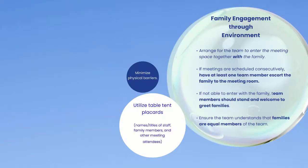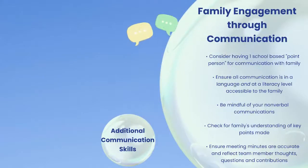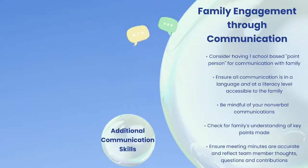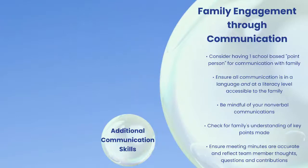Do simple things like minimize physical barriers and utilize table tent placards with names and titles of staff and the family. An example of minimizing physical barriers would be to sit beside family members rather than across from them. For communication, consider having one school-based point person for communication with the family. Ensure all communication is in a language and at a literacy level accessible to the family. Be mindful of non-verbal communication and check for the family's understanding of key points. Ensure meeting minutes are accurate and reflect all team members' thoughts, questions, and contributions — including the family's.